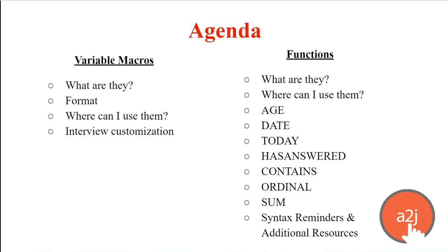For variable macros, we'll talk about what they are, how to format them in A2J Author, where you can use them in an A2J guided interview, and how to customize your interview using them. For functions, we'll talk about what they are, where you can use them in an interview, then we'll cover seven specific function examples, and finish off with syntax reminders and additional resources where you can find more information about the other functions available in A2J Author.